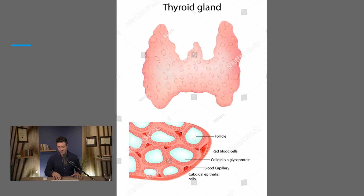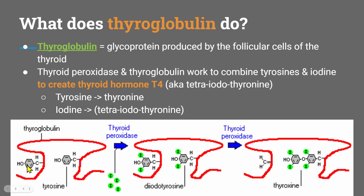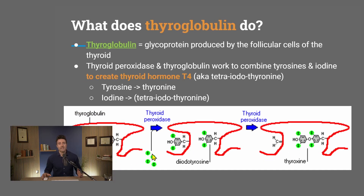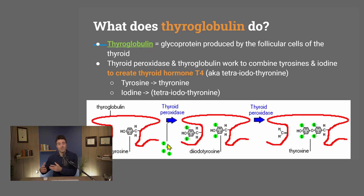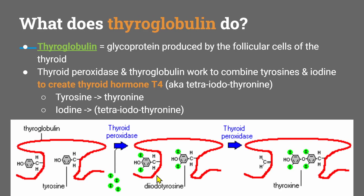Thyroglobulin works along with thyroid peroxidase, and this schematic is helpful to visualize what's happening. Thyroglobulin and thyroid peroxidase take tyrosine — the amino acid tyrosine — and combine it with iodine. Through a few steps, you end up with tetraiodothyronine. This is T4 — tetraiodo for four iodines, as depicted here — and the tyrosine becomes a tyrosine backbone.